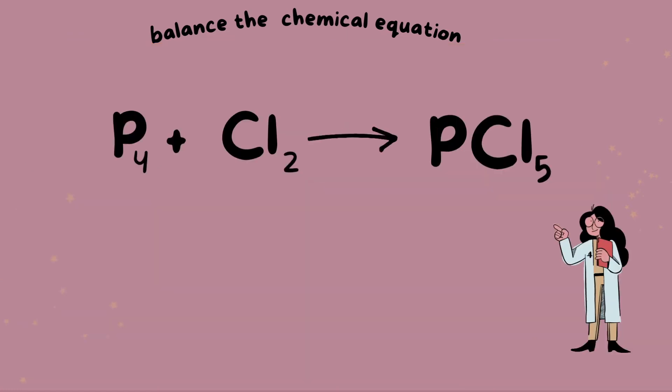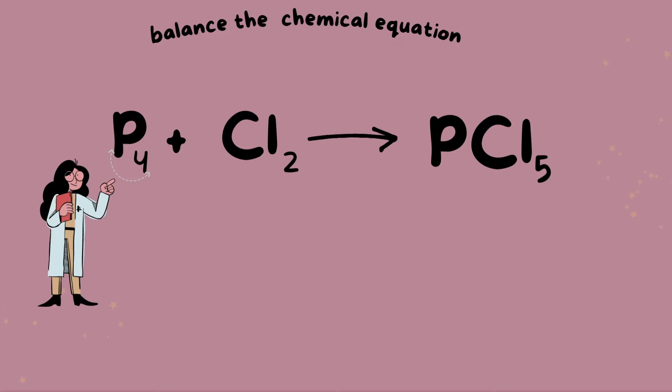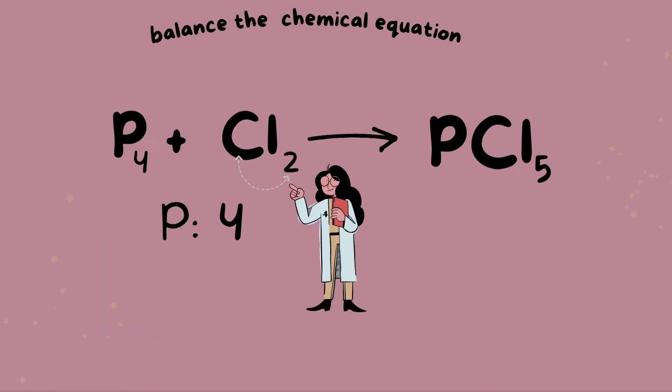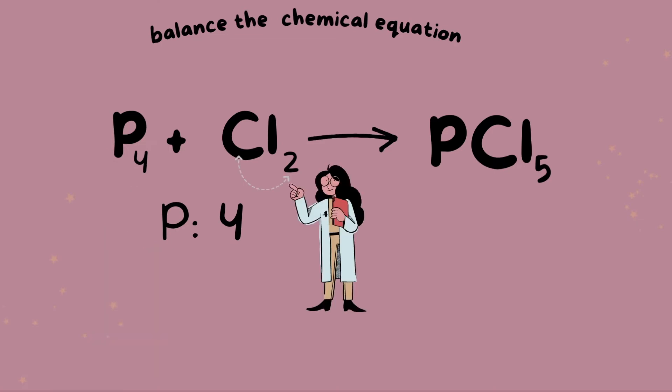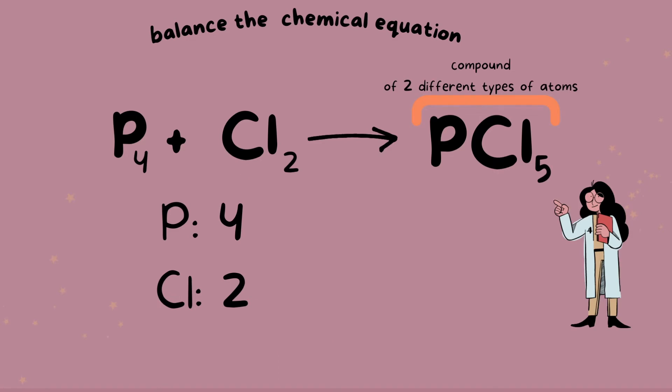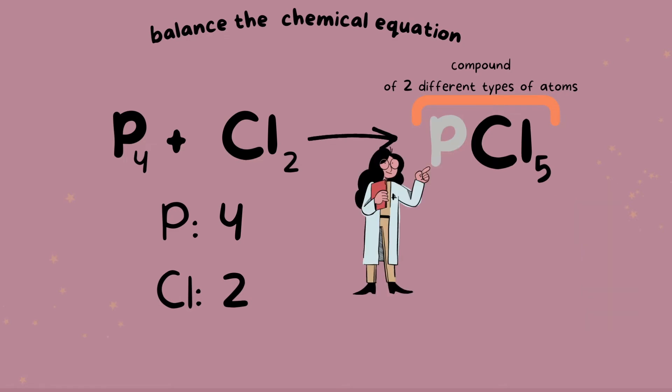Next, let's try phosphorus plus chlorine yields phosphorus pentachloride. Starting off with phosphorus. We have four phosphorus indicated by the subscript. We have two chlorine and I want to point out here that we have a compound of pentachloride together. This compound is made of two different elements, both phosphorus and chloride.